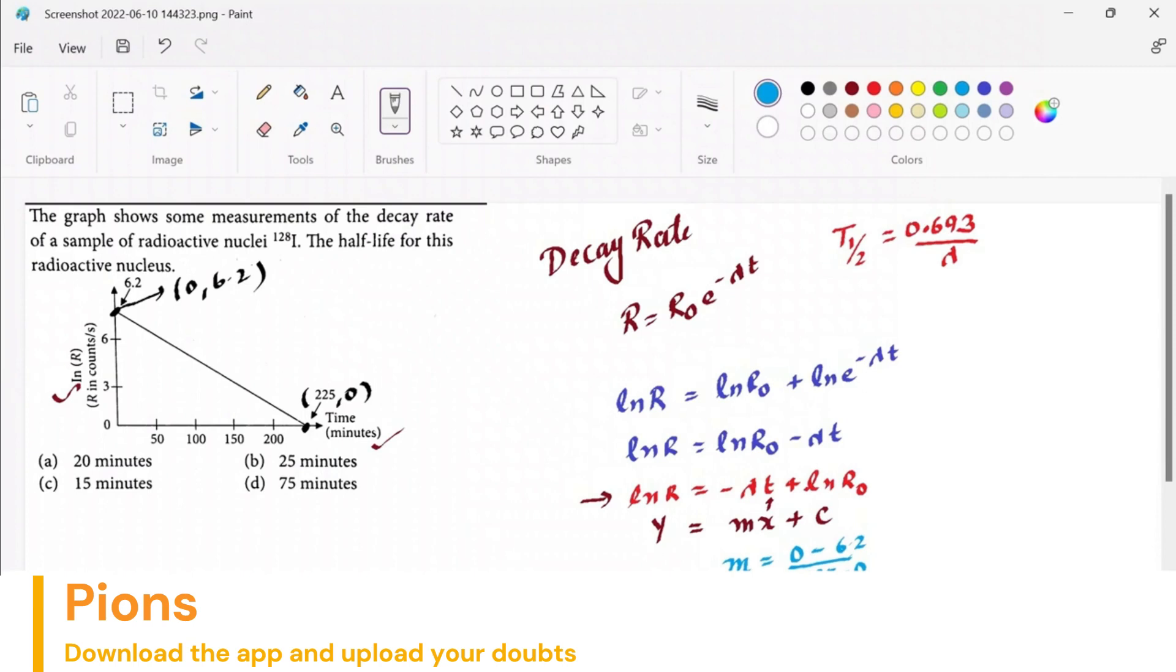6.2 divided by 225, that's nearly 0.0275 or 0.0276. So this is your slope, and that slope is negative, which you can see from the graph.